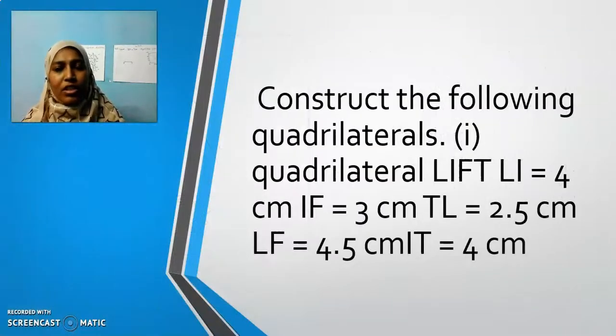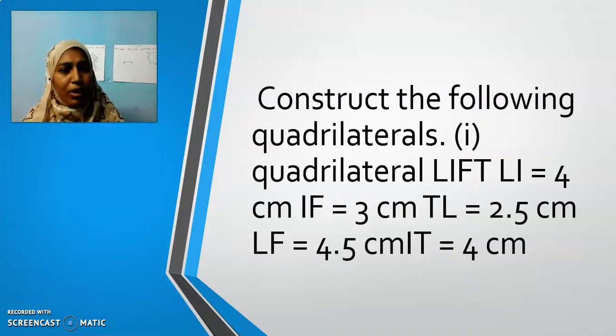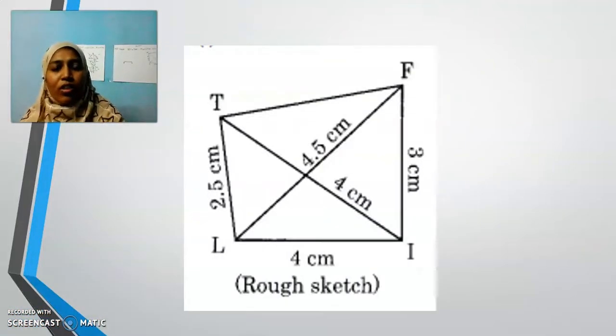Then the next question for you is: construct the following quadrilaterals. It is from our exercise. I have drawn one, I will draw one. All the remaining things you should complete it. It is all about practice only. Quadrilateral LIFT: LI equals 4, IF equals 3, TL equals 2.5, LF equals 4.5, IT equals 4 cm. Draw the rough sketch in your classwork note.